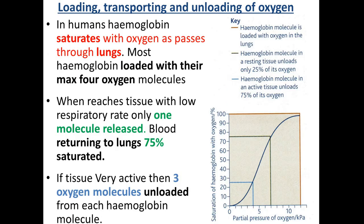There is an important point about the capacity to increase the amount of oxygen delivered to tissues as respiration increases. Normally at the lungs, hemoglobin becomes fully saturated with oxygen, picking up all four oxygen molecules across its four heme groups. But at rest, it actually only unloads one of the four molecules at the tissues, returning to the lungs with 75% saturation — three out of the four oxygen molecules still bound.